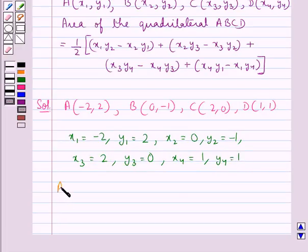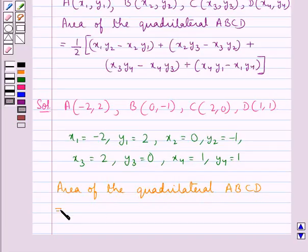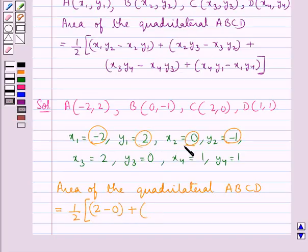So we have area of the quadrilateral ABCD is equal to half into x₁y₂, that is (-2) into (-1) which is 2, minus x₂ into y₁, that is 0 into 2 which is 0, plus x₂y₃, that is 0 into 0 which is 0.